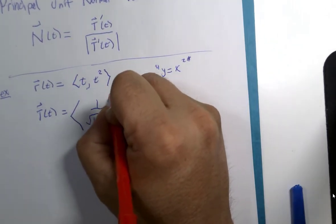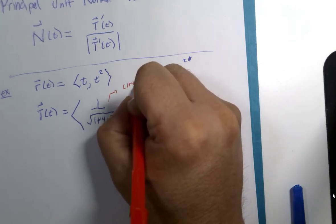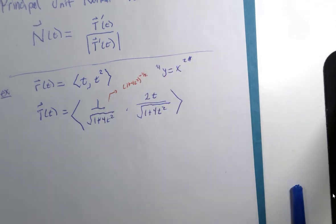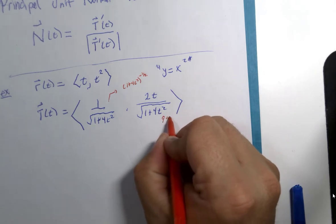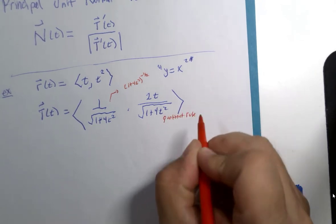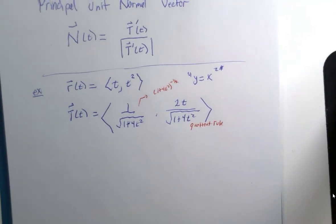For this particular expression I'm going to consider this as 1 plus 4t squared to the negative half power and use the power rule, but I'm going to use the quotient rule here. And one of my reasons is just to display a variety of beginning calculus skills.